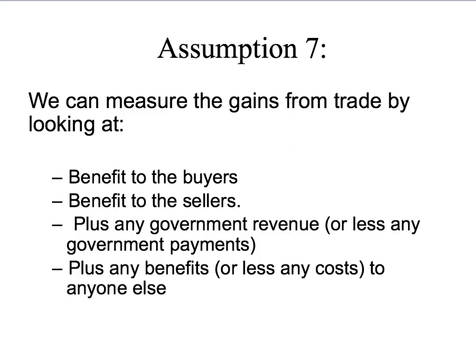Let's look at the assumptions we explicitly need for welfare economics. We're going to build welfare economics on our perfectly competitive market model, so our first six assumptions still hold. However, we've got assumption seven, which is pretty straightforward: we can measure the gains from trade by looking at the benefit to buyers, the benefit to sellers, plus any government revenue or less any government payments, and plus any benefits or less any costs to anyone else. Anybody affected by a market transaction is included in our measure of gains or losses from trade.